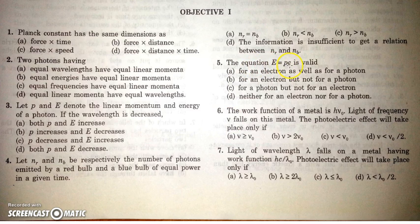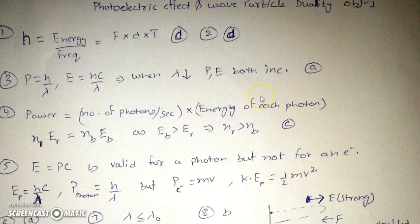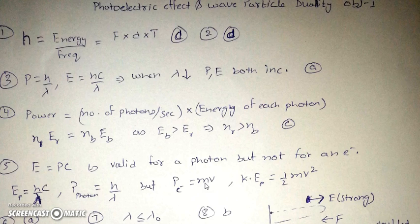In the next question, the equation E = PC is valid only for photons, not for electrons, since an electron has mass. For a photon, E = hc/λ and momentum P = h/λ. For an electron of mass m and speed v, momentum is mv and kinetic energy is ½mv², which is not equal to PC. So E = PC is valid for photons only.